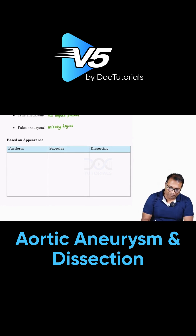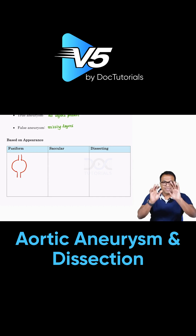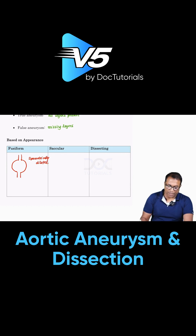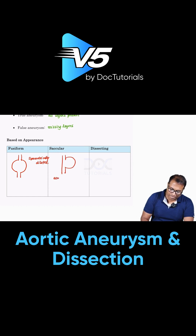Now based on the shape, we have many types. An aneurysm which is symmetrically dilated on both sides is called a fusiform aneurysm. Asymmetrically dilated is called a saccular aneurysm.